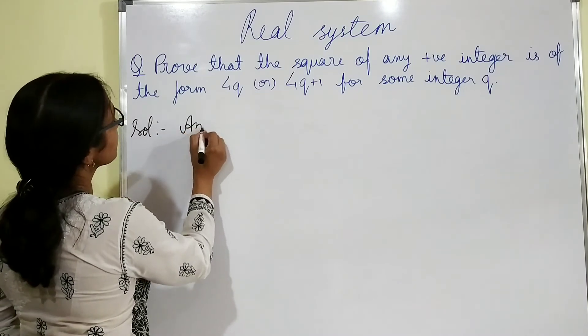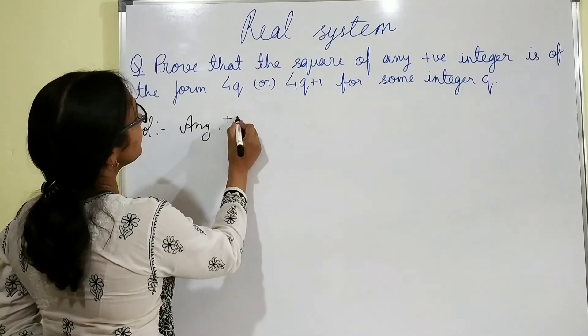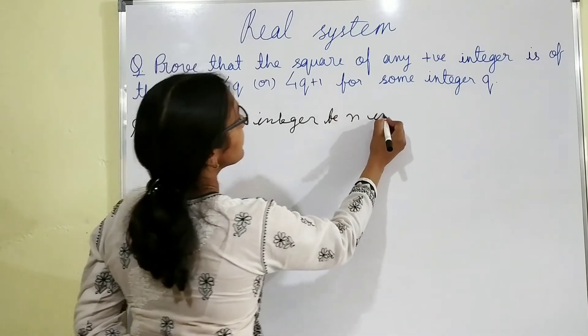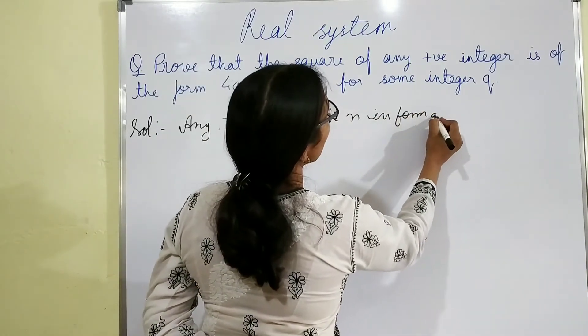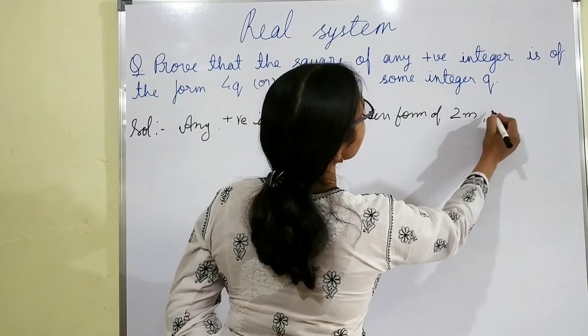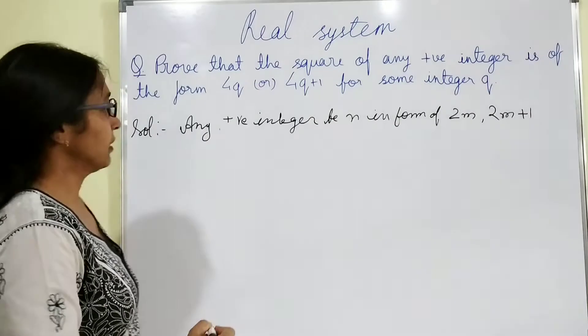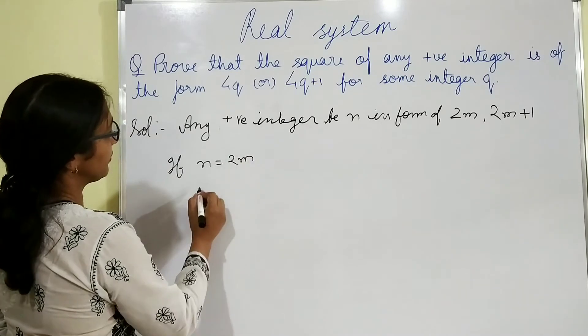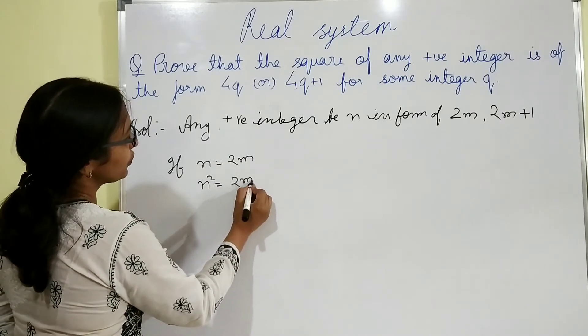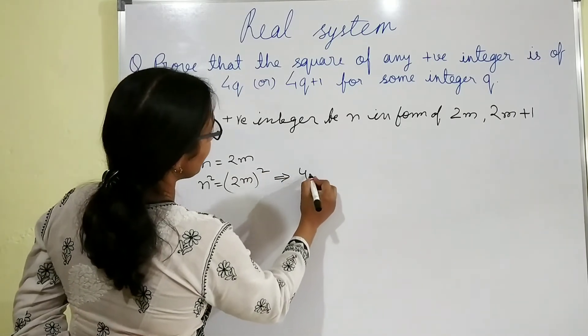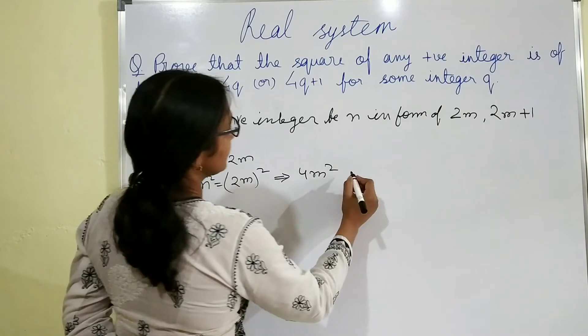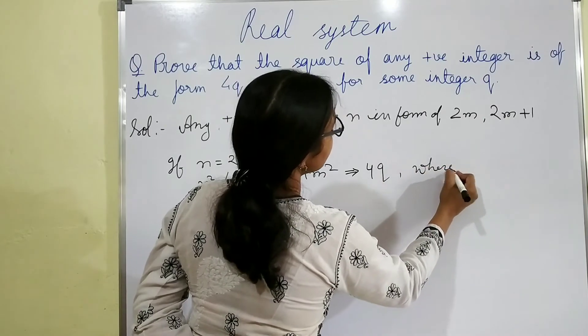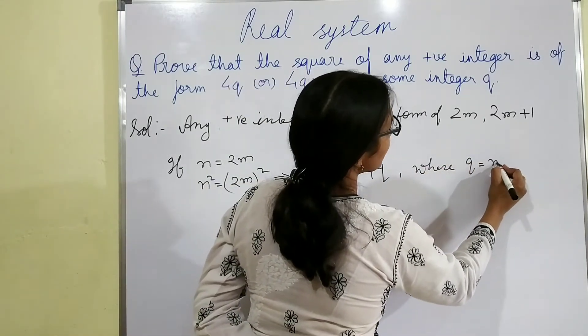Let any positive integer be n in form of 2m or 2m plus 1. So if n equals to 2m, then n square equals to 2m square equals 4m square, which equals 4q where q equals to m square.